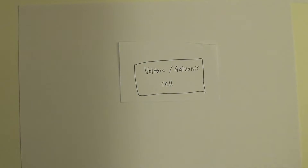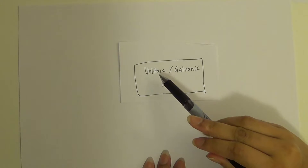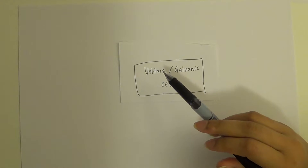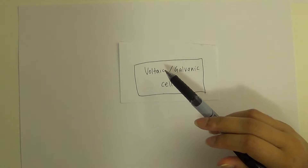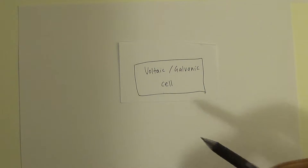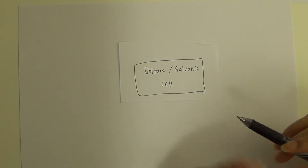Hey everyone, so in today's video we're going to be looking at one of two types of redox cells, and that is the voltaic cell. It's also called the galvanic cell, but for the purpose of this video I'll just be calling it a voltaic cell — they are the same thing.